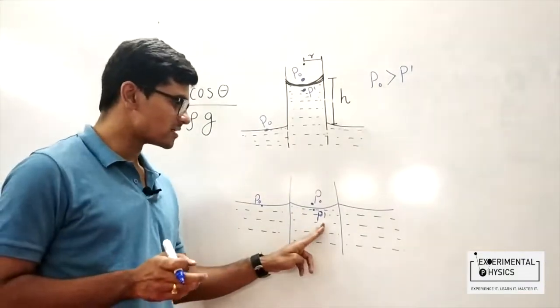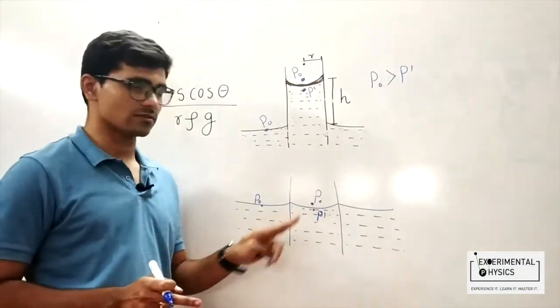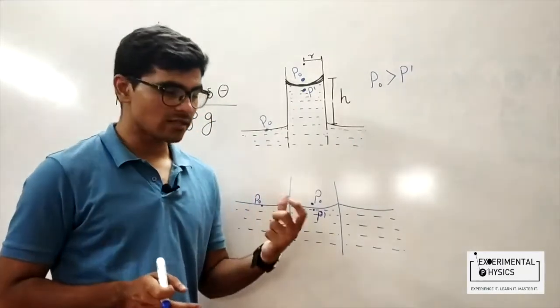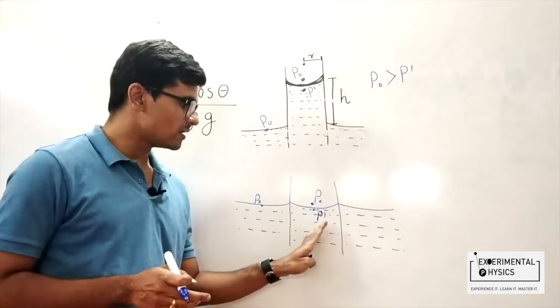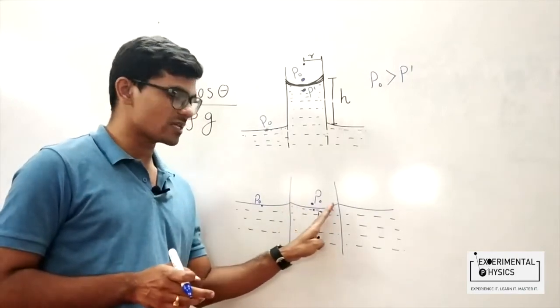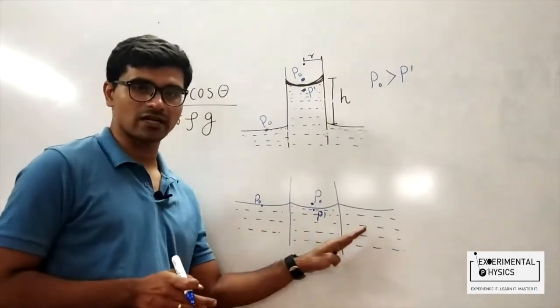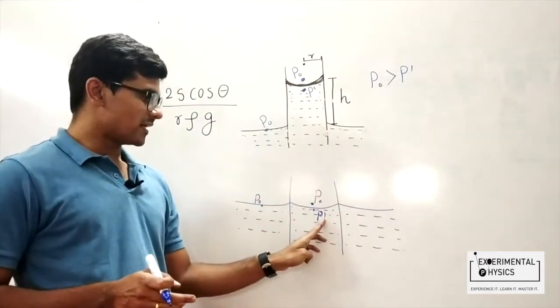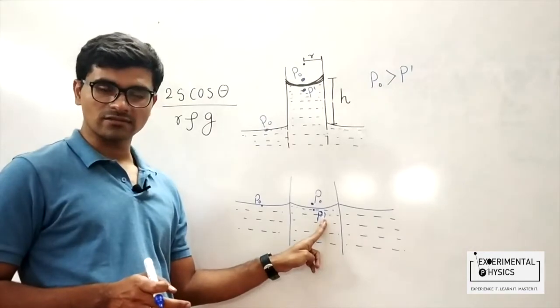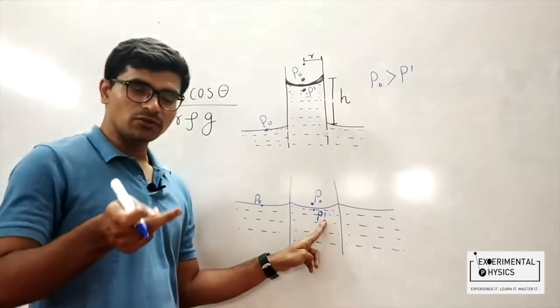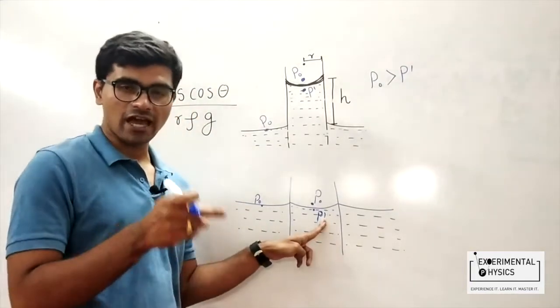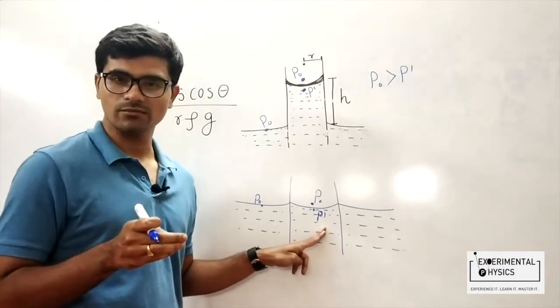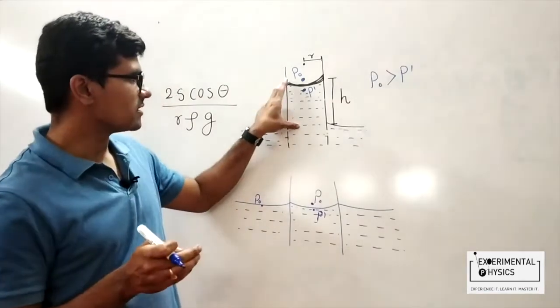Now how does nature accommodate this? Well, nature has a solution. It does not allow water to stay at the same level as the outside level. It goes like this. The pressure that has decreased, p', due to that decrement, we have to compensate. We have to compensate that decrement in the pressure. And how does nature compensate it? Well, by increasing the height.